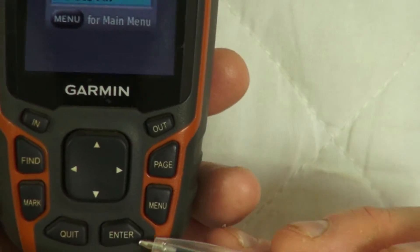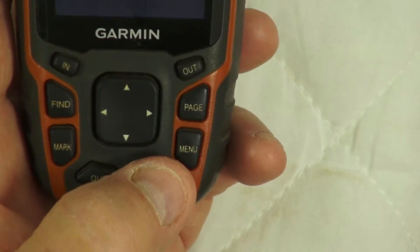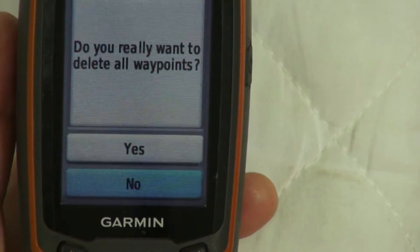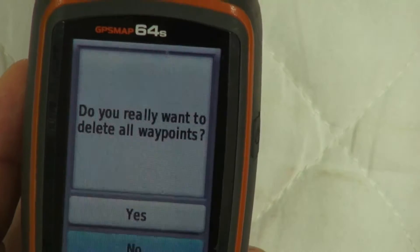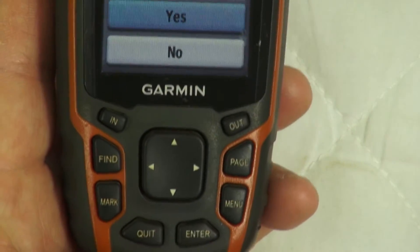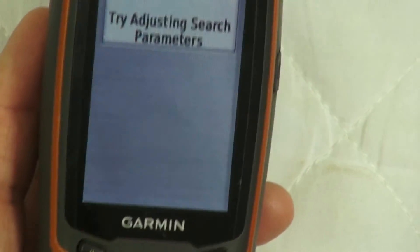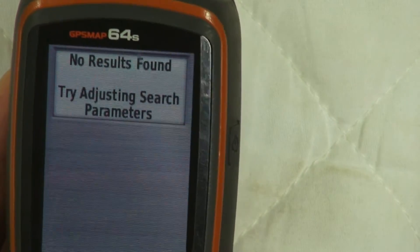If you want to delete them all, press enter. It'll ask you 'are you sure?' Using the rocker, highlight yes, press enter, and now all of them are gone.